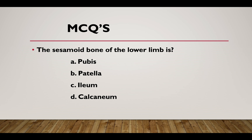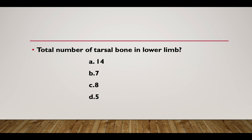Tarsal bone question: What is the number of tarsal bones in the lower limbs? Option A: 14. Option B: 7. Option C: 8. Option D: 5. Answer: Option B — 7.